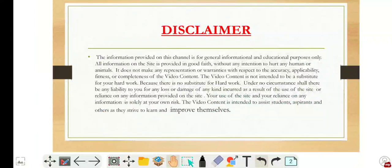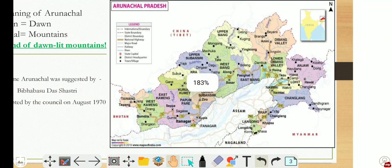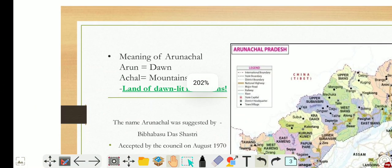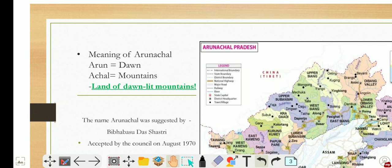First of all, I would like to ask what is the meaning of Arunachal? Most of you might be familiar with the word and its meaning. Arun means dawn and Achal means mountain, so basically the meaning of Arunachal is the land of dawn-lit mountains. The name was first suggested by Shri Bibhabasu Das Shastri, the then Director of Research, and was accepted by the Council in August 1970.